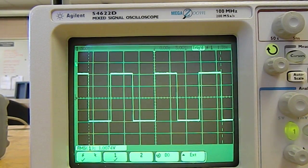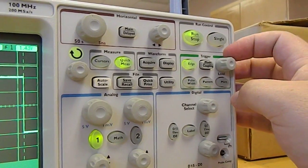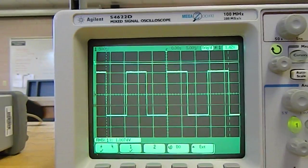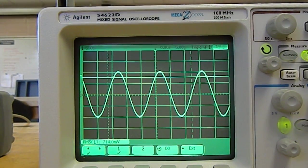the oscilloscope, because it was originally triggered on this signal, it's not able to update. So how do I get this to show my new signal? Well, I need to change the trigger level again using this rotary knob. And if I change it and scoot it down over the signal, then you can see that it